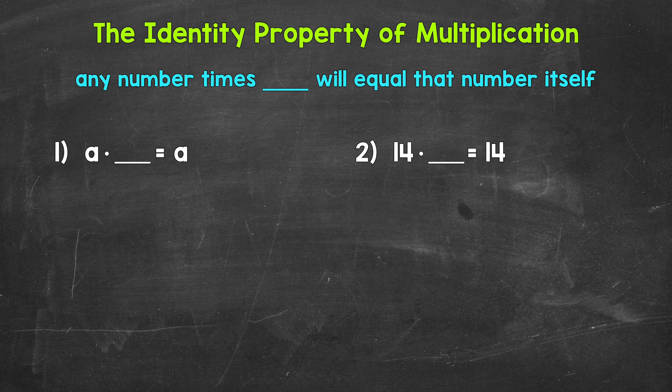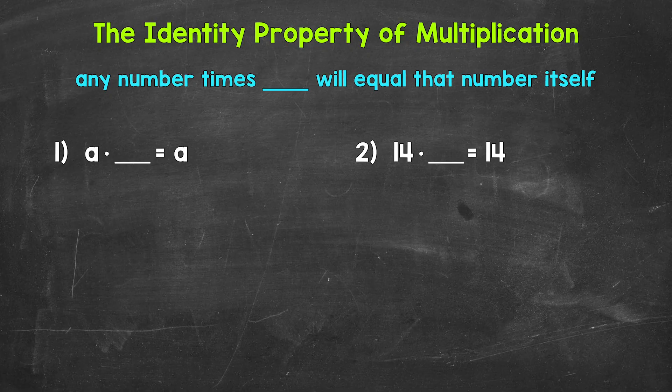So, for the identity property of multiplication, what can we multiply any number by to equal that number itself? Well, any number times 1 will equal that number itself, and it's as simple as that. Let's jump into number 1,